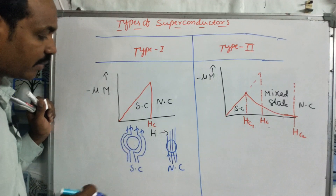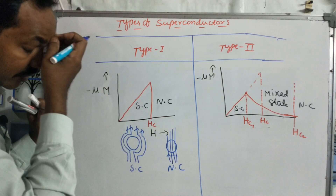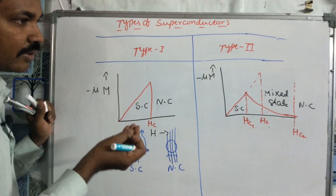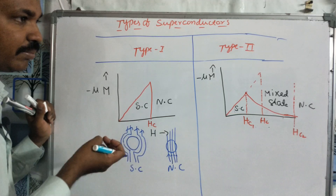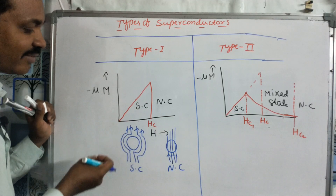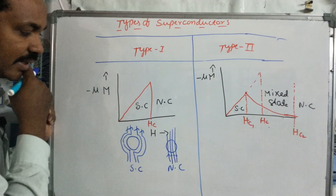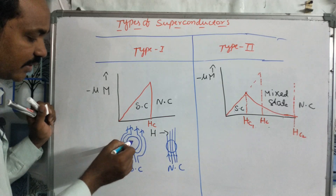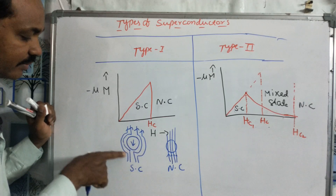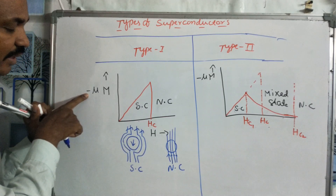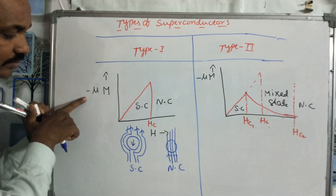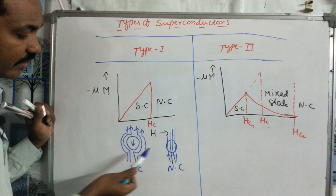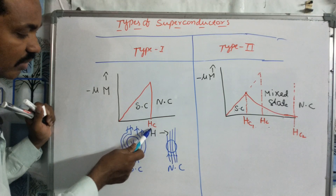For a Type 1 superconductor, the material is a single element, with no dopants or impurities. It shows zero resistance. The internal magnetic field is opposite to the external magnetic field, demonstrating the Meissner effect.